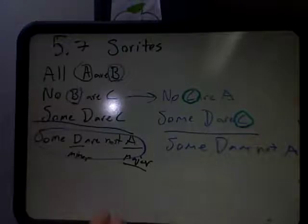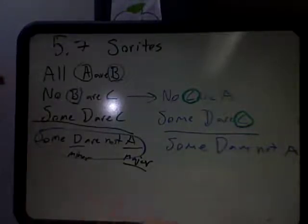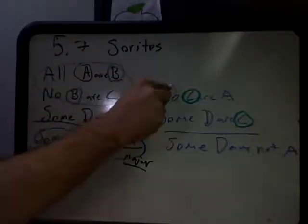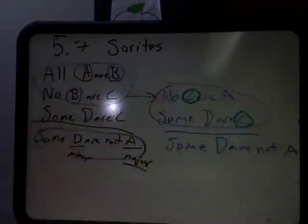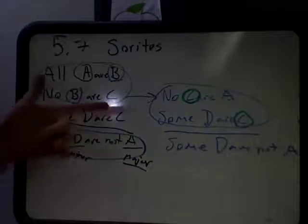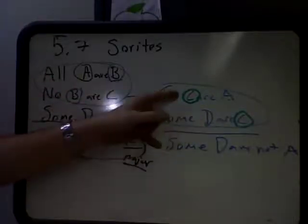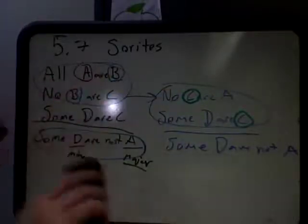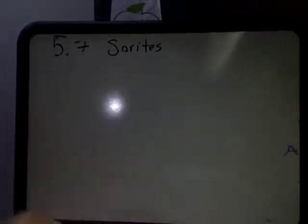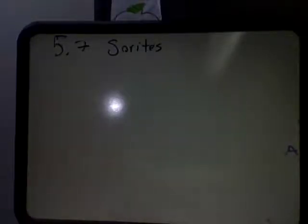I apologize for the horrible handwriting, but you can see that we really have two different arguments here. The first argument was premises one and two, and this is the second argument — the second set of premises. The line 'No C or A' actually functioned as the missing premise of the second argument and the missing conclusion of the first argument. Then you can test for validity using those terms. But before we do that, let's try another example that might be a little bit more difficult.